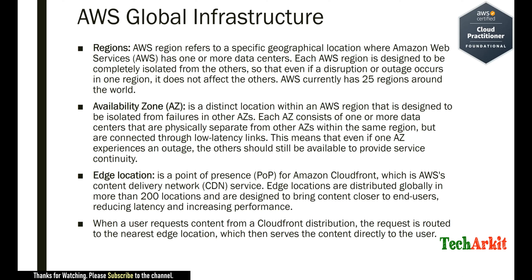These availability zones within a region have multiple data centers connected with low latency links. Low latency means you can transfer data seamlessly within one to two milliseconds from one data center to another. If you have applications deployed across multiple availability zones with data replication enabled, the data will replicate to the other availability zone in near real time as soon as possible.